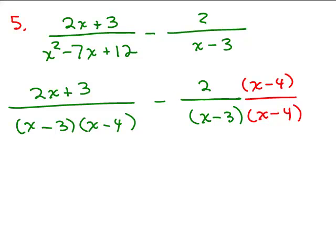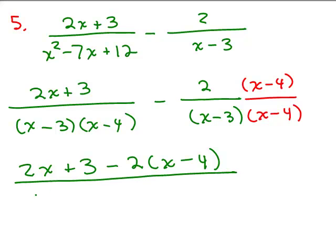So I'm going to do it this way. 2x plus 3 minus 2x minus 4. That's why I'm going to write the new numerator, because you're subtracting 2 times that all over x minus. It's always important to copy your problems correctly.